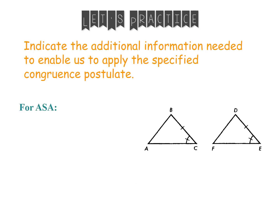For some practice before your worksheet, let's indicate the additional information needed to apply the specific congruence postulate labeled. Here we have two triangles. In order to use ASA, since S is in the middle, I would have to have the side between two angles. The only angles that would include the side already labeled would be angles B and D. So in order for ASA, we'd have to show that angle B is congruent to angle D — that side would then be between those two angles, and we would have ASA.